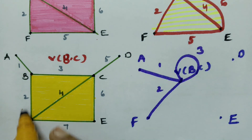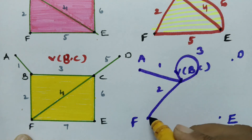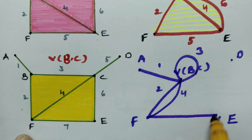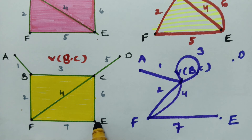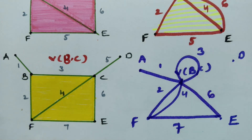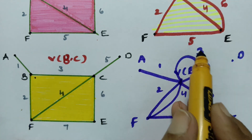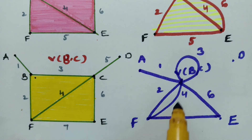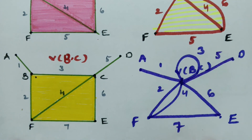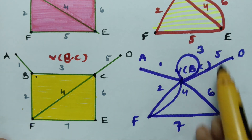From F, there are three edges: one with B (edge 2, already done), one with C (edge 4), and one with E (edge 7). From E, there are two edges: one is edge 7 (with F, done) and one with C, which is edge 6. From C, there are four edges: one with B (loop, edge 3, done), one with F (edge 4, done), one with E (edge 6, done), and one with D (edge 5). Counting all edges: 1, 2, 3, 4, 5, 6, 7.